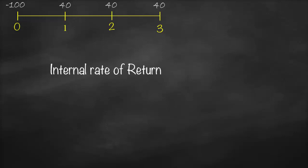Why do we use the word 'internal'? It's called internal rate of return because it assumes that all cash flow generated will be reinvested at the same internal rate of return — at the same higher rate. For example, in year one we generated 40 million dollars. We are going to reinvest it at the same IRR. In year two we generated another 40 million, which is also reinvested at IRR.